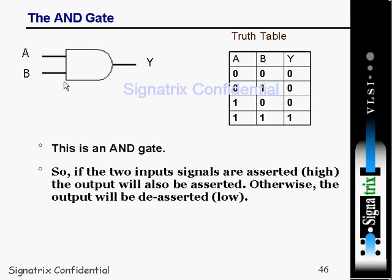Now take the example of an AND gate. A and B are inputs and Y is the output. From the truth table: when both inputs are 0, output is 0; when one input is 0 and the other is 1, output is still 0; when A is 1 and B is 0, output is 0; only when both inputs are 1 do you get a high output at Y.